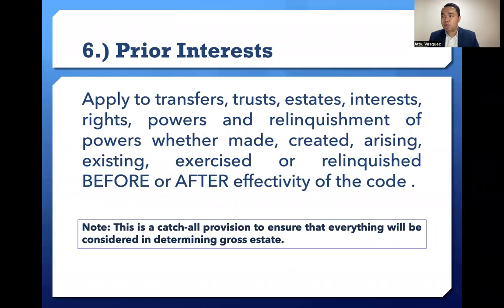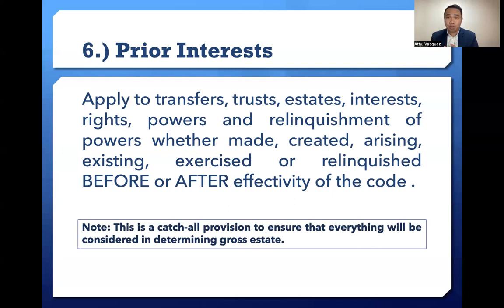The sixth item is prior interest. It applies to transfers, trusts, estates, interests, rights, and powers, and relinquishments of powers, whether made, created, arising, existing, exercised, or relinquished before or after the effectivity of the tax code. This is a catch-all provision to ensure that everything will be considered in determining the gross estate. Transfers in contemplation of death, revocable transfers, and proceeds of life insurance — whether made, created, arising, existing, exercised, or relinquished before or after the effectivity of the tax code — shall be included in the decedent's gross estate.